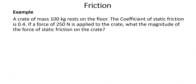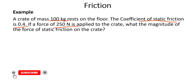This example says: a crate of mass 100 kg rests on a surface, and the coefficient of static friction is 0.4. If a force of 250 Newton is applied to the crate, what is the magnitude of the force of the static friction on the crate? The normal force on the object balances its weight, so Fn equals mass times gravity.